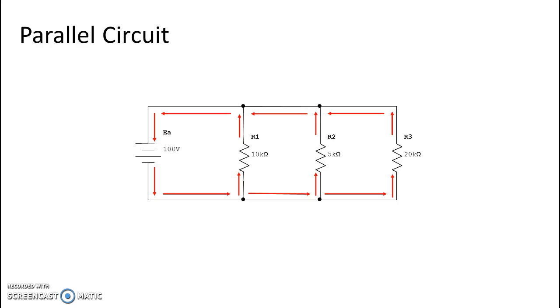Now this is a very simple parallel circuit. Each one of our branches only has one resistor in it, R1, R2, and R3. And I'm going to go ahead and pop up the branches so we can associate each of them.